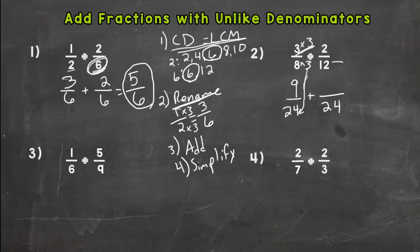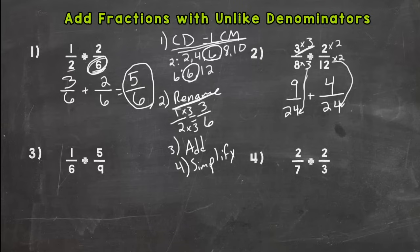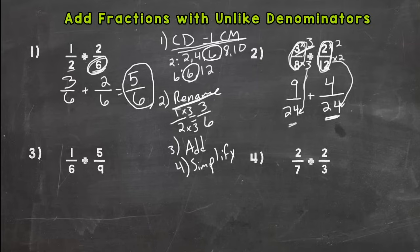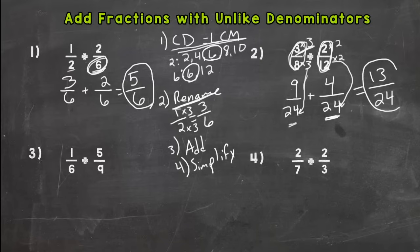For the second fraction, twelve times two is 24, so we do that to the top — two times two is four. We get four twenty-fourths. Nine twenty-fourths is equivalent to three-eighths, and four twenty-fourths is equivalent to two-twelfths. Now we can add: nine plus four is thirteen, keep the denominator 24. The only common factor between 13 and 24 is one, so thirteen twenty-fourths is our answer in simplest form.